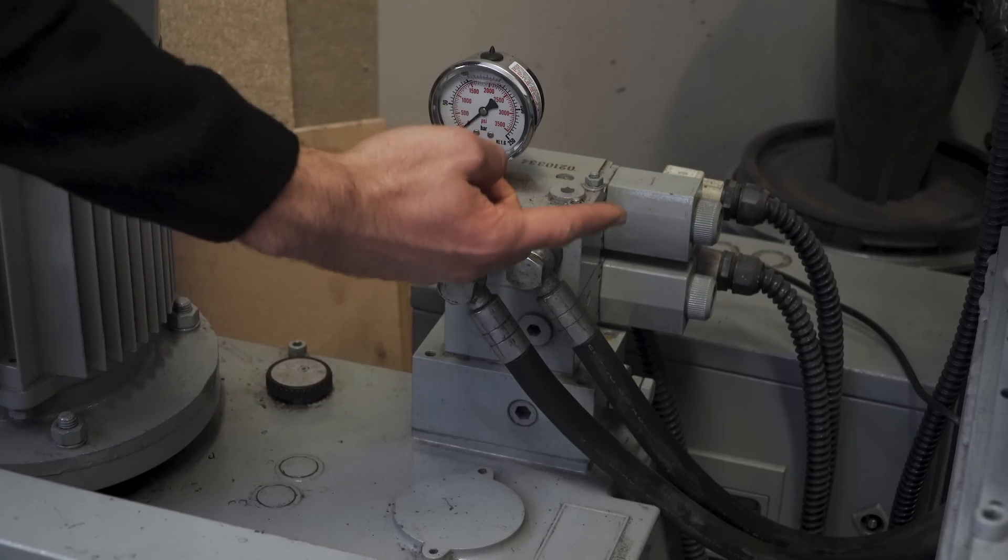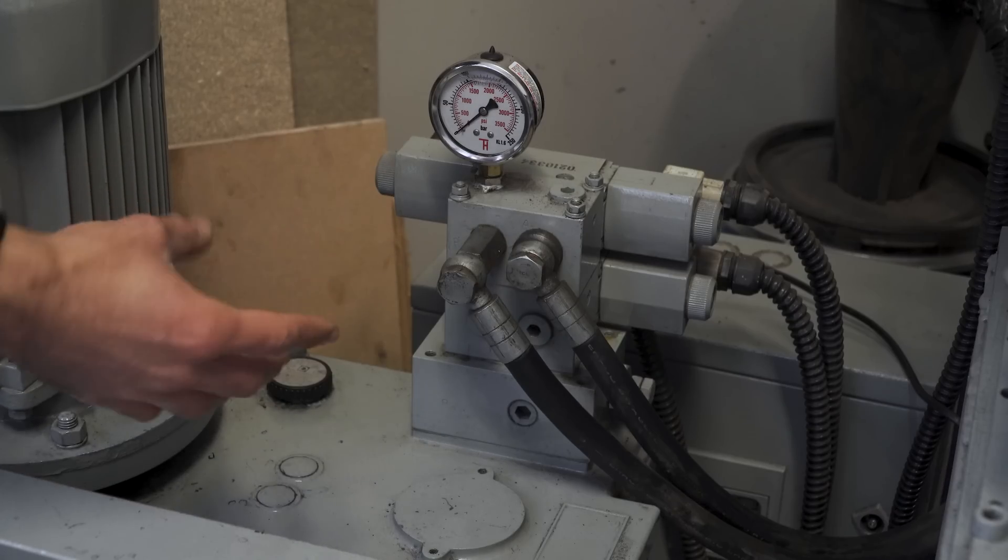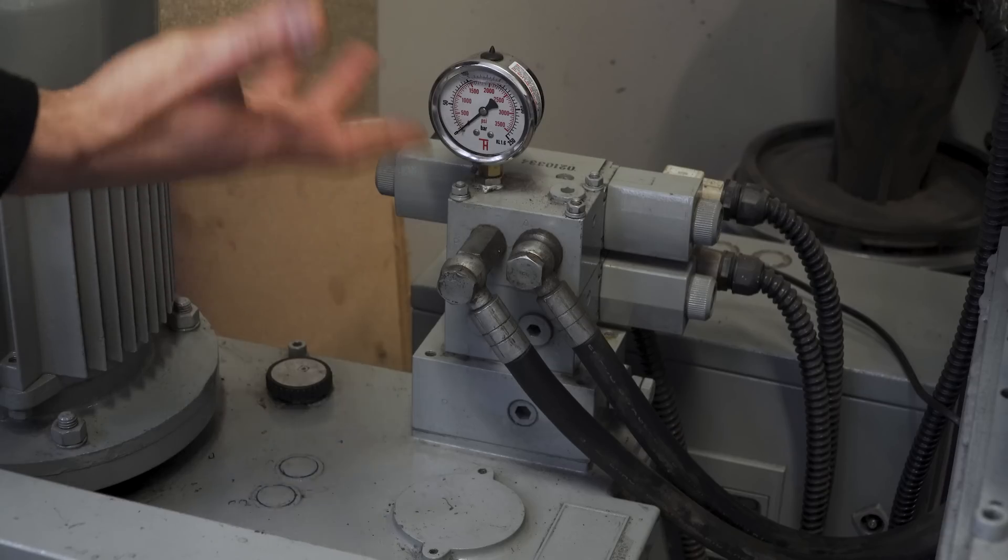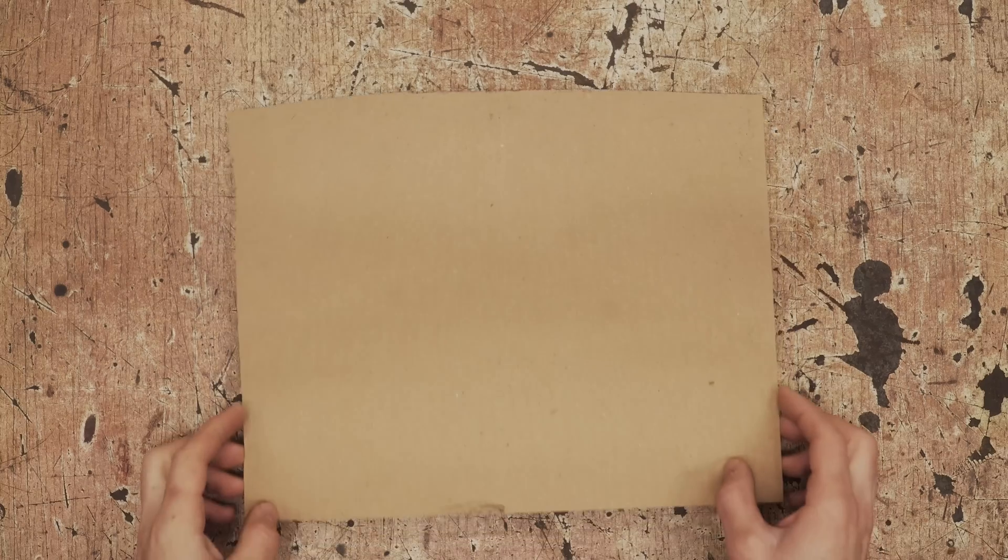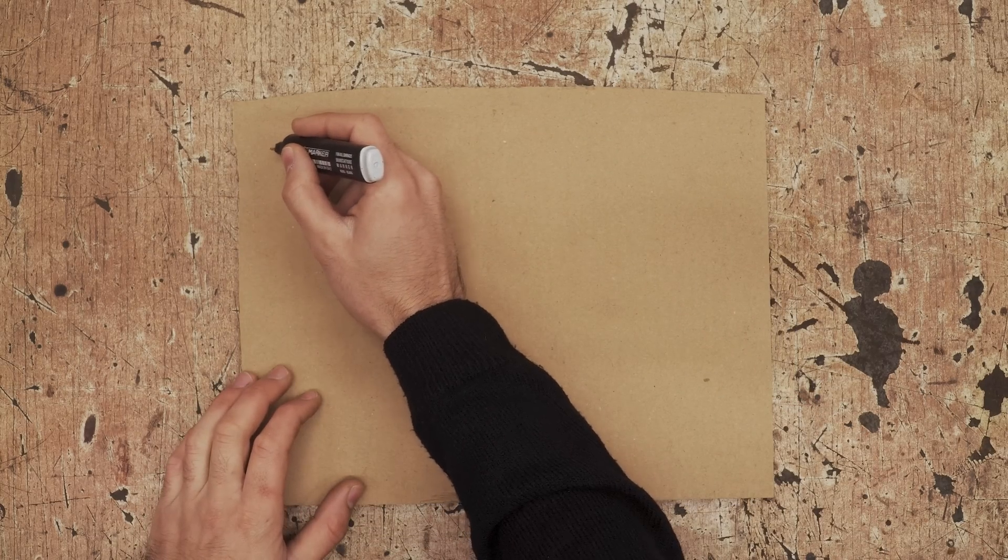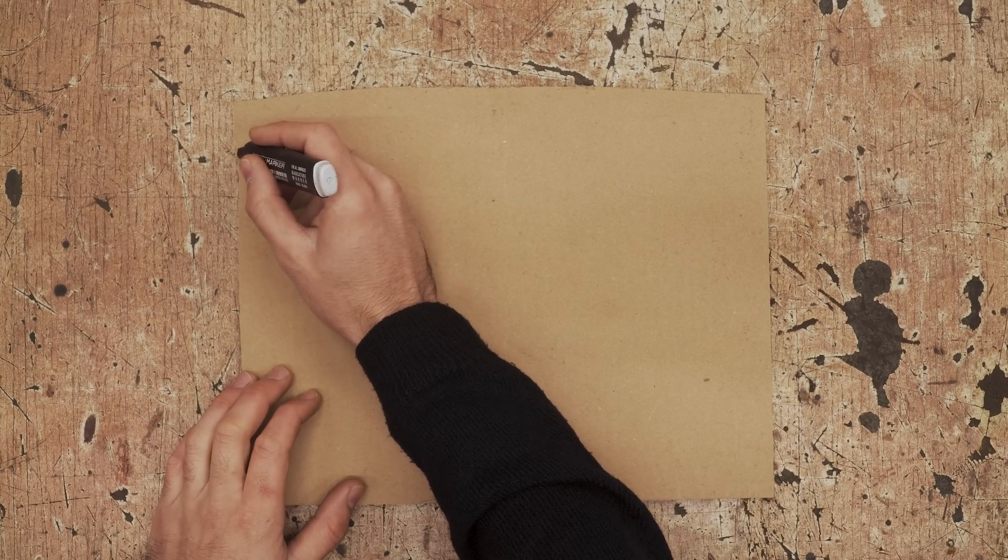So since this press uses valves to control the piston, I should be able to implement some kind of a limit switch. And now that you have an idea of how this works, let me show you what I want to make.